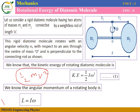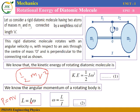For linear motion, the momentum P equals mass times velocity M into V. For a rotating object, the angular momentum L equals I times omega. From equation two, we can write omega equals L divided by I.